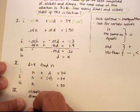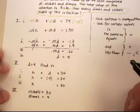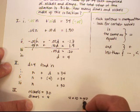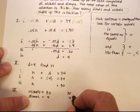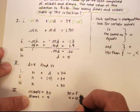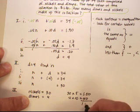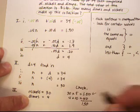Let's just check that to see if this is actually true. 4 times 10 gives me 40 cents. 30 times 5 gives me 150. 150 plus 40 gives me 190. So the check actually works.